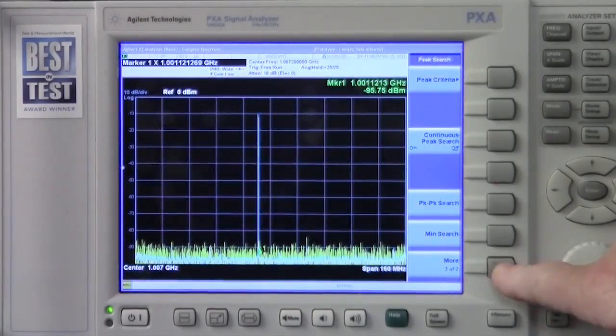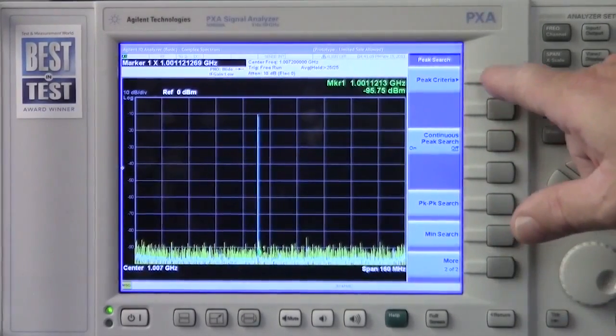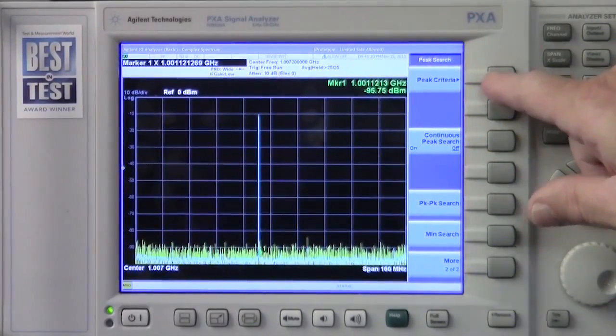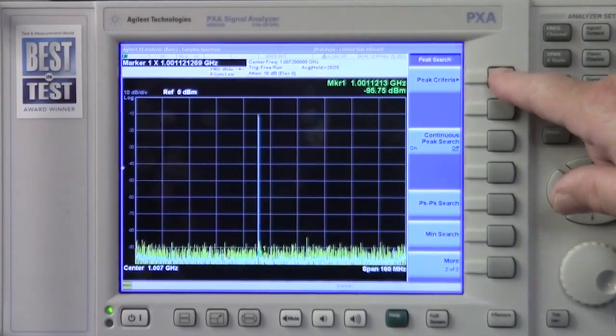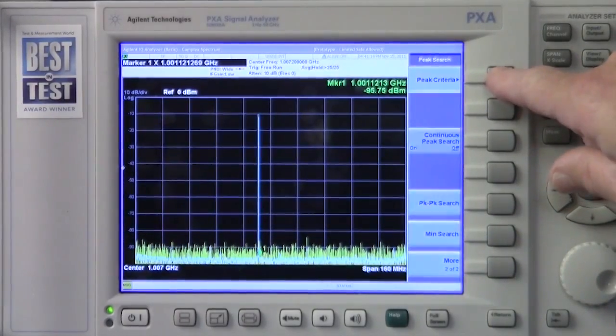In the IQ analyzer mode, on the second page of the peak search menu is the same peak criteria menu that we've used for years in the spectrum analyzer mode.